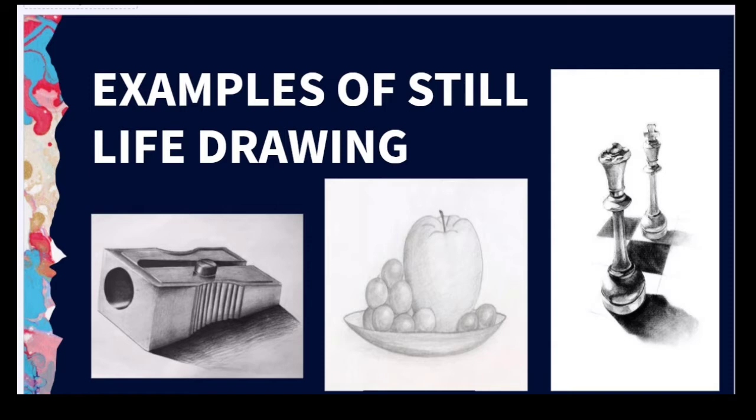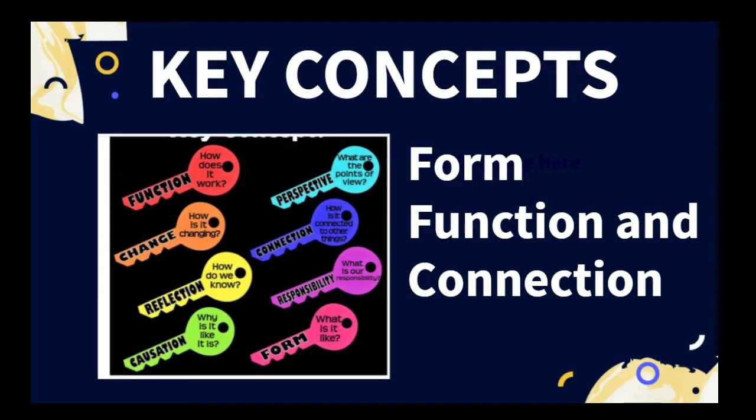Here are some examples of still life drawing. In this drawing, our key concepts are form, function and connection. Form means it is three-dimensional in form. Function means it focuses on still objects. And connection means it shows us a new way of looking at the ordinary objects around us.